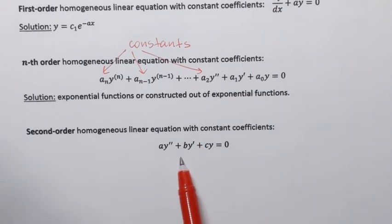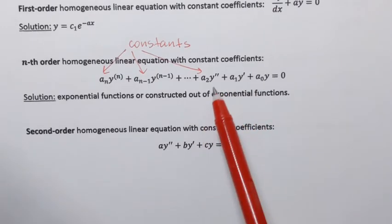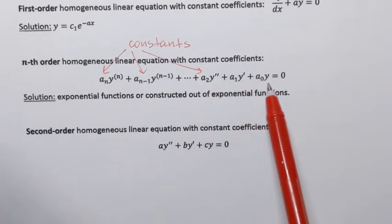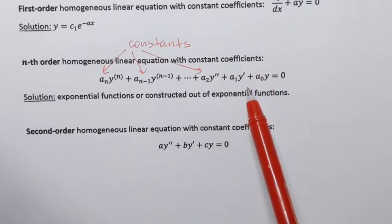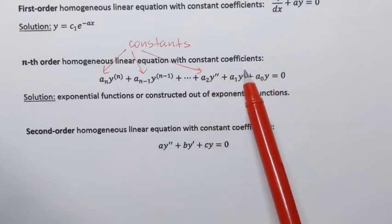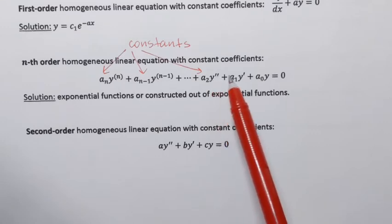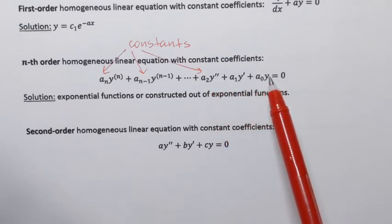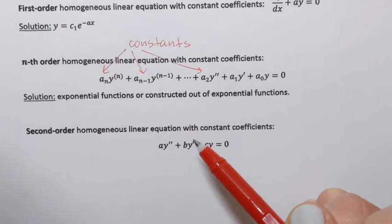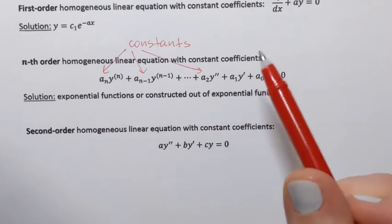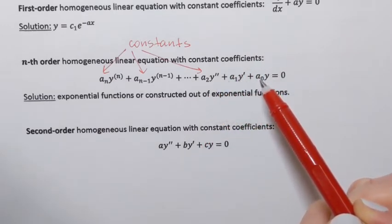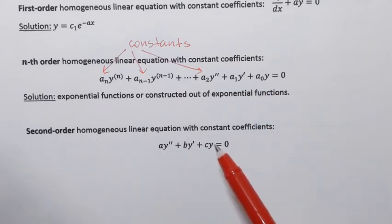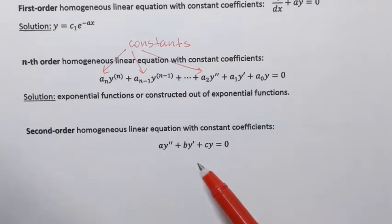Here it is. It's basically just those three terms of the nth order homogeneous linear equation with constant coefficients — second derivative, first derivative, and just y. I also need to point out that coefficients a2, a1, and a sub 0 are relabeled and now they're called a, b, and c. It's just going to be easier to work with them in that form.